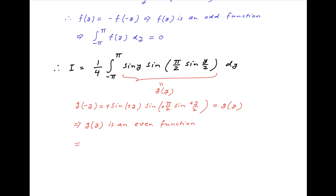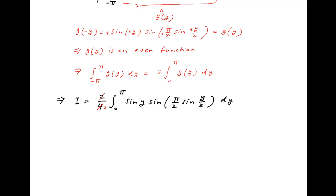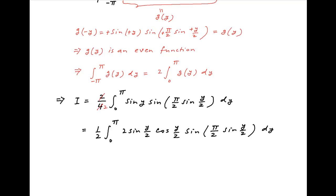In other words g(y) is an even function, and therefore using properties of definite integrals, the integral from minus π to π of g(y) dy equals 2 times the integral from 0 to π of g(y) dy. Therefore I equals (2/4) times the integral from 0 to π of sin(y)·sin(y/2) dy. Using sin(y) = 2·sin(y/2)·cos(y/2), this becomes I equals 2 times the integral of sin²(y/2)·cos(y/2) dy.